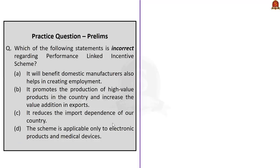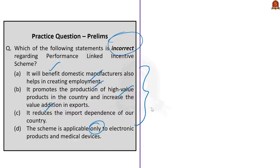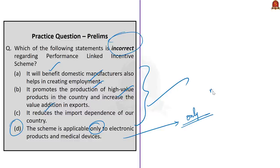The next prelims question asks us to identify the wrong statement about the PLI scheme. Statement A: it benefits domestic manufacturers and helps in creating employment. Statement B: it promotes high-value product production and increases value addition in exports. Statement C: it reduces the import dependence of a country. Statement D: the scheme is applicable only to electronic products and medical devices. Statements A, B and C are correct. Statement D is incorrect because the scheme has been expanded to many sectors including food processing, telecom, electronics, textiles and automobiles — it is not limited to electronic products and medical devices. The incorrect option is D.